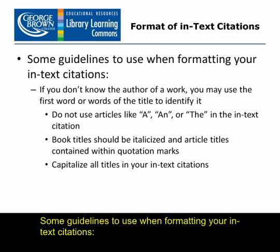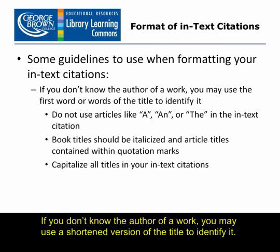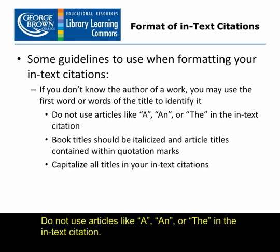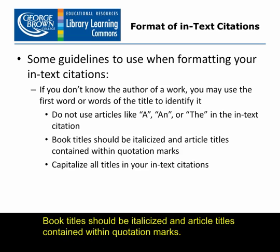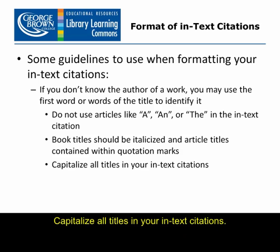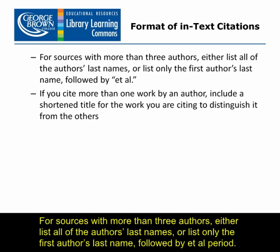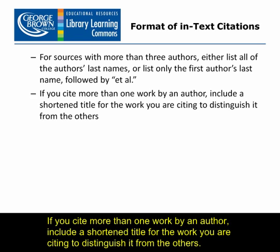Some guidelines to use when formatting your in-text citations: if you don't know the author of a work, you may use a shortened version of the title to identify it. Do not use articles like a, an, or the in the in-text citation. Book titles should be italicized, and article titles contained within quotation marks. Capitalize all titles in your in-text citations. For sources with more than three authors, either list all of the authors' last names, or list only the first author's last name followed by et al. If you cite more than one work by an author, include a shortened title for the work you are citing to distinguish it from the others.